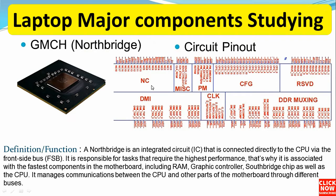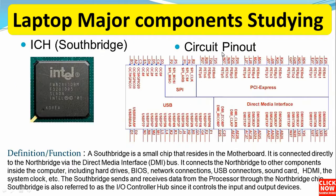This section contains the control signals that control the flow of data between the GMCH and RAM. As a definition, the North Bridge is an integrated circuit connected directly to the CPU via the Front Side Bus (FSB). It is responsible for tasks that require the highest performance, and is associated with the fastest components on the motherboard including RAM, graphic controller, South Bridge chip, and the CPU. It manages communications between the CPU and other parts through different buses — connected to the CPU via FSB, to the ICH via DMI, and to the RAM via the RAM bus.